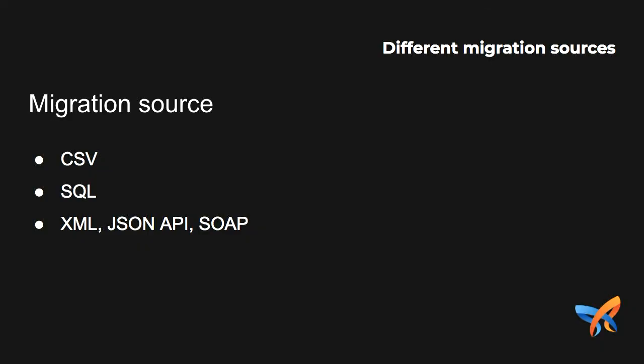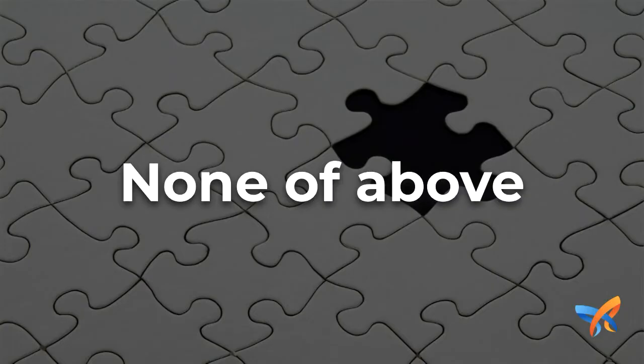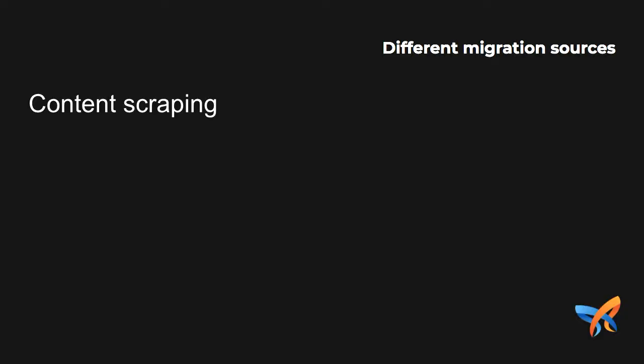Migration source: the Migrate API supports a wide range of data sources, so you can import from CSV, XML, JSON, JSON API, and you can even do SQL queries if you have access to the database. But in some cases, exporting data from the source may not be possible, or maybe the data structure is too complicated or too hard to handle. So what can you do?